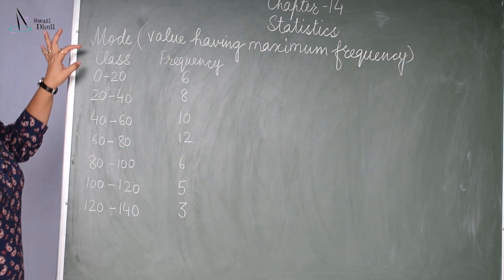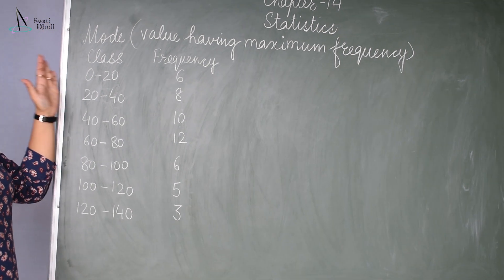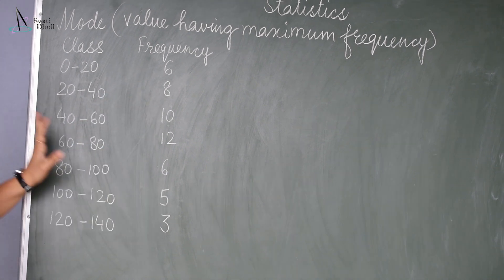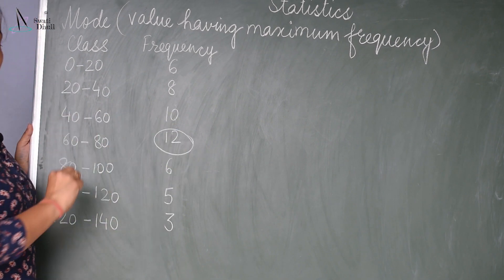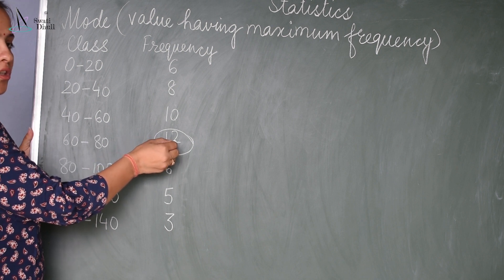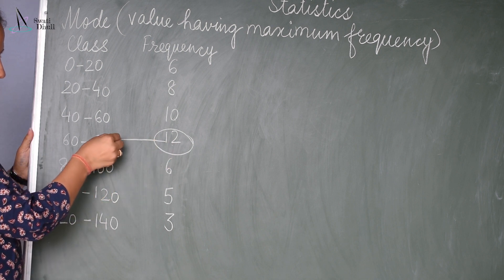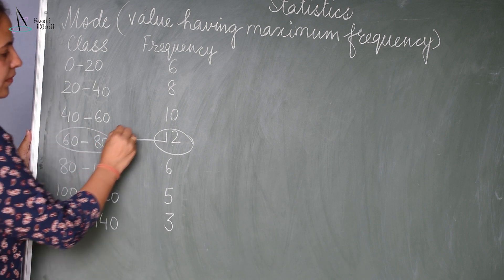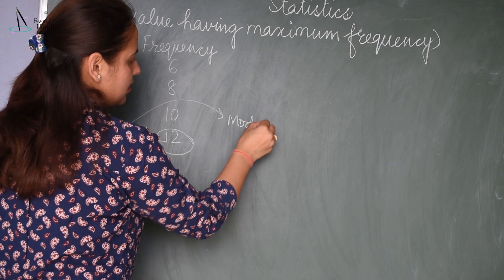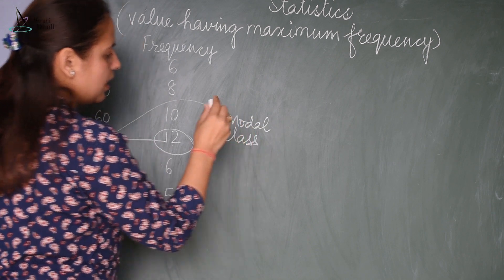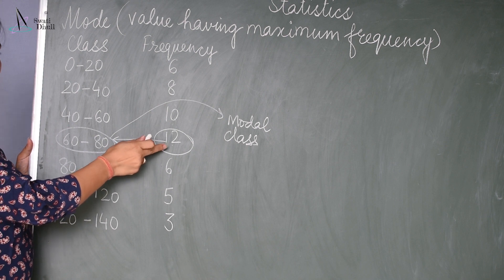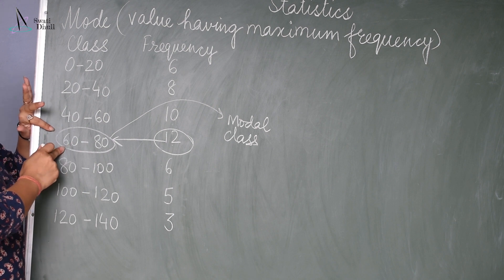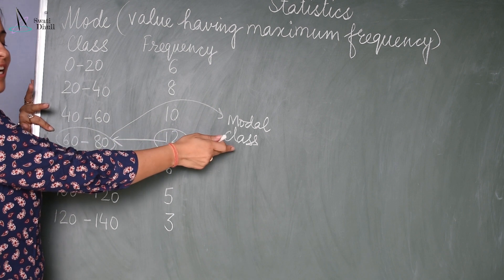To find out the mode, first of all we have to see which is the maximum frequency. From this data, the maximum frequency is 12 and the class interval corresponding to this highest frequency is 60 to 80. This is called the modal class — whatever class interval corresponds to the maximum frequency, we call it the modal class.